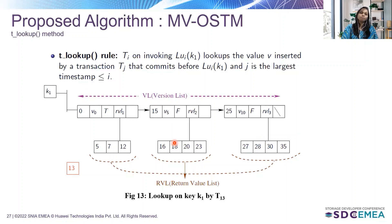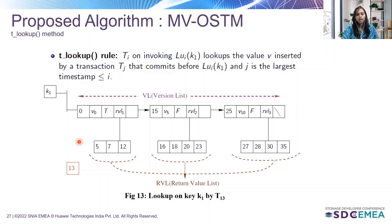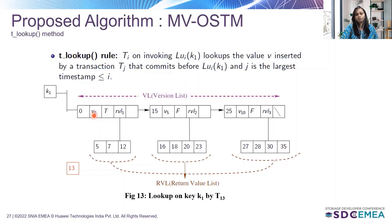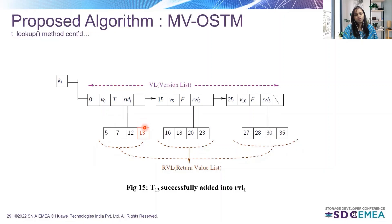Let's discuss the tlookup method of MVOSTM. The same example has key K1 with three versions in the version list: 0, 15, and 25. Now, transaction T13 wants to look up key K1. It will identify the largest available timestamp less than 13. Among 0, 15, and 25, zero is the largest available timestamp less than 13. So it will read the value from version 0 and then add itself into the return value list of version 0. That is the tlookup method.